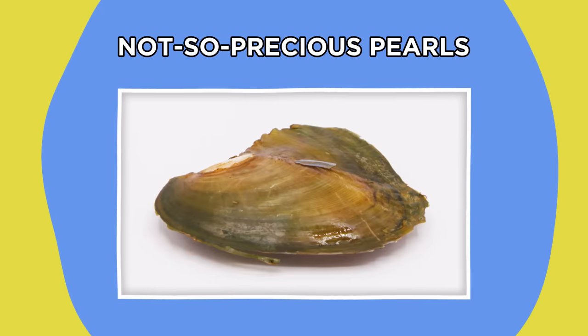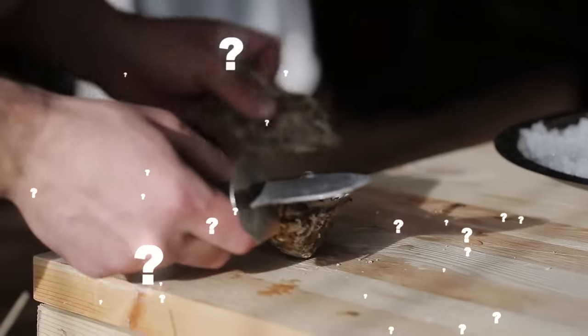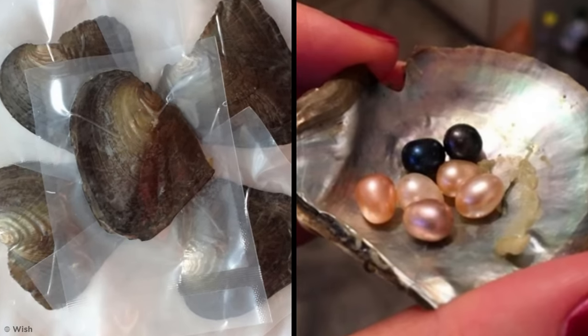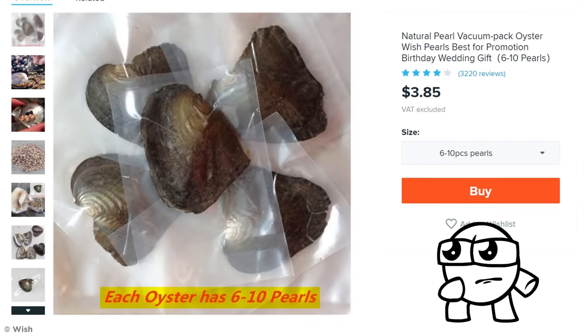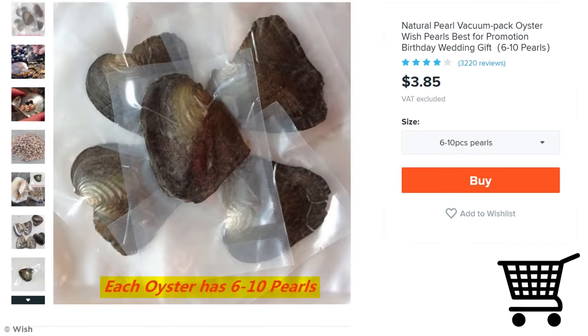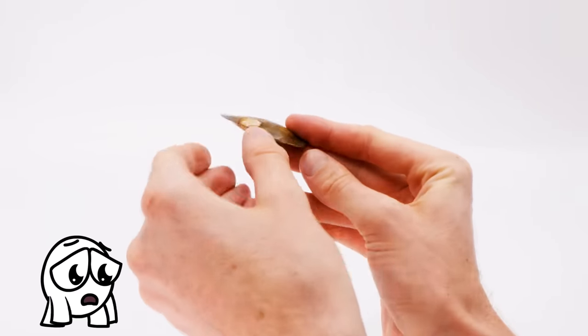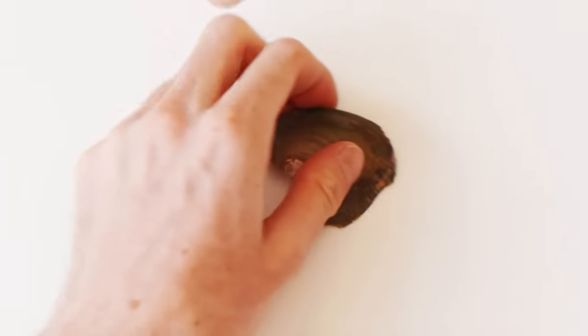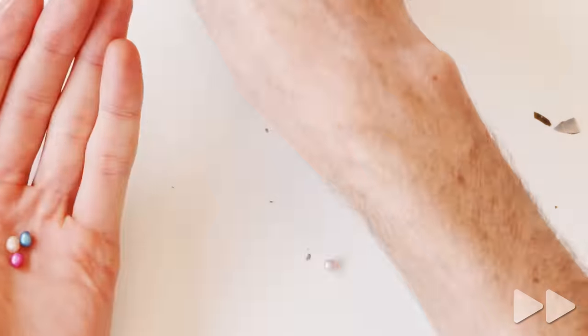Not-so-precious Pearls. A lot of people appreciate pearls when they're set in something like jewelry. But have you ever wanted to get your pearls fresh from the source? Well, for as little as three dollars and eighty-five cents, Wish offers you the option to crack your own clam and release a guaranteed six to ten pearls within. This seems super sus, so I decided to buy one and see if these things were the real deal. And when it arrived, the size alone was pretty disappointing. The images made the shells look large, but this is barely half the size of my palm. Let's see if there's anything inside. Huh. I was promised at least six pearls, and six pearls I received.